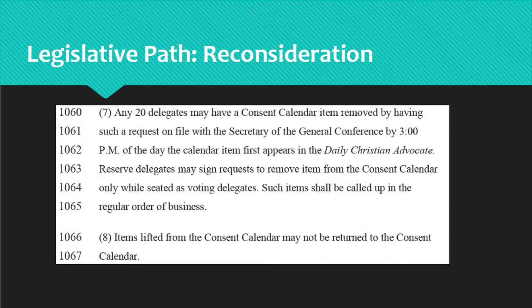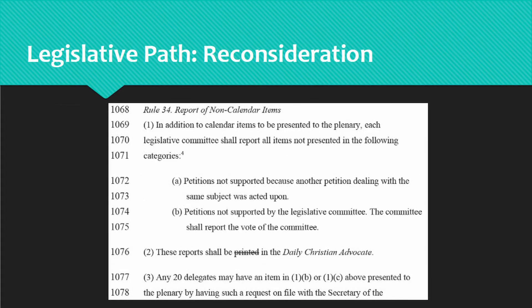However, it is not guaranteed that such petitions will get a full measure of debate. Depending on where the petition is placed on the order of business, and how rushed the plenary is to get through all petitions, the petition could get swept into an omnibus motion for action right before adjournment. Petitions that were not supported in legislative committee may also be reconsidered. This only applies to petitions that were individually voted down — it does not apply to legislation that was rejected in favor of another item dealing with the same paragraph or subject.